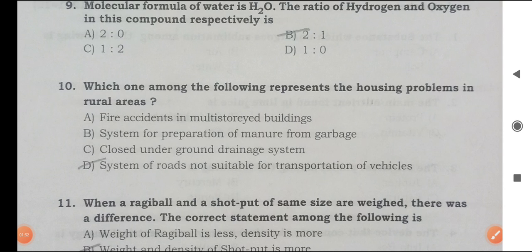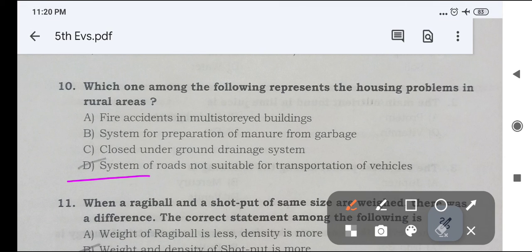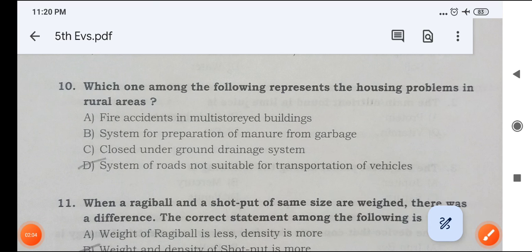Next, which one among the following represents the housing problems in rural area? Answer B option, system of roads not suitable for transportation of vehicles is the right answer.